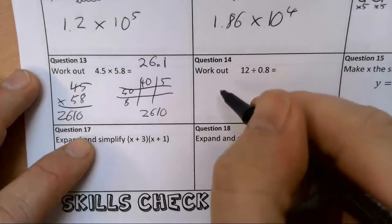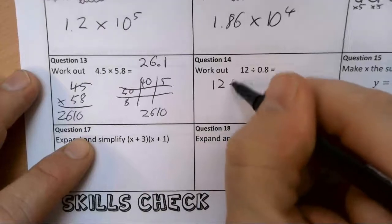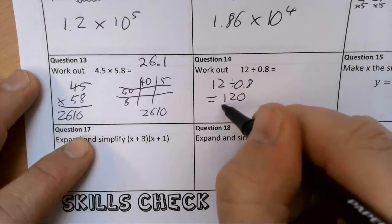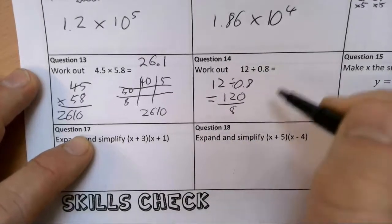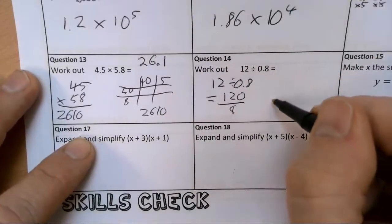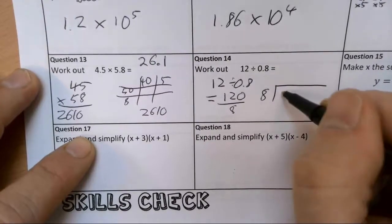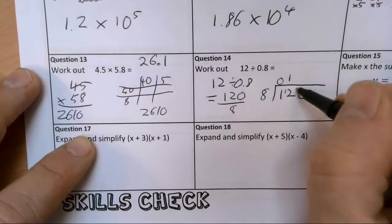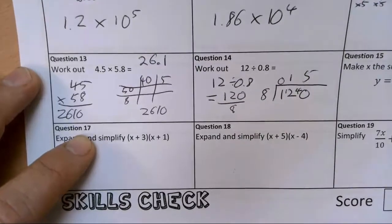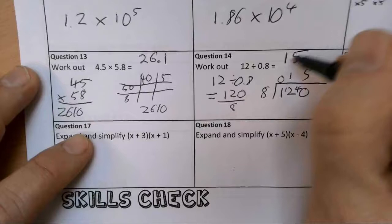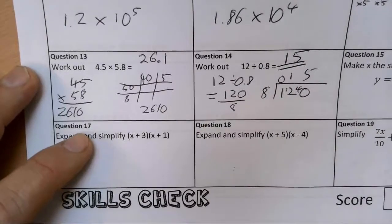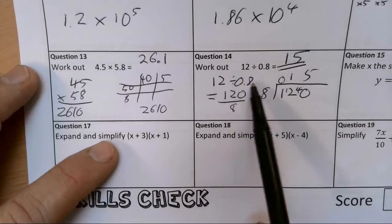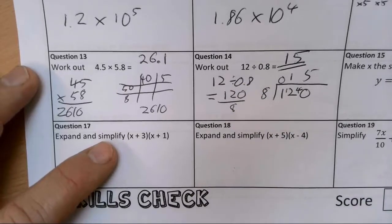12 divided by 0.8 is going to be the same as 120 divided by 8. So we've got, if we do a little bus stop for that, 120 divided by 8. 8 goes into 12 once, 4 is left over, it goes into 40 five times. The answer here is 15. This is just equivalent fractions. 12 divided by 0.8 is the same as 120 divided by 8.